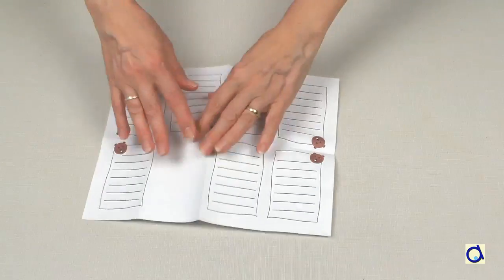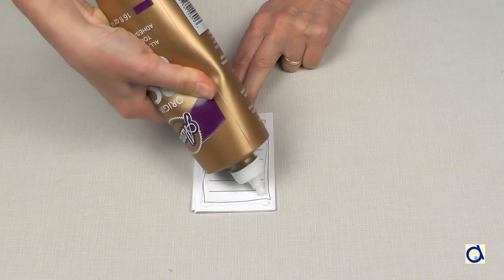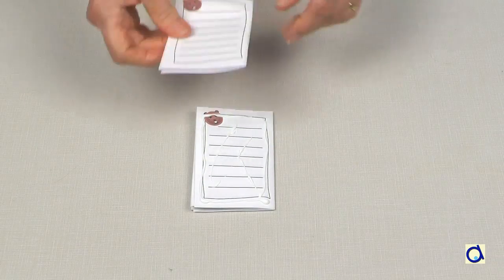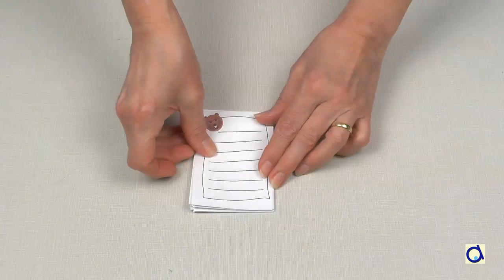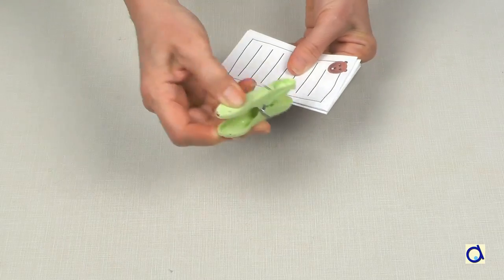Put white glue on the last page of the passport and glue the first page of the supplement on it. Hold in place with clothespins until it's dry. This way, you get a reading passport with more pages to record books.